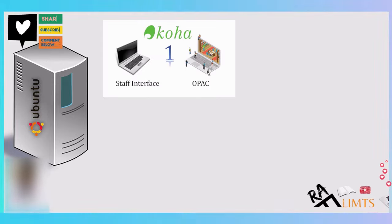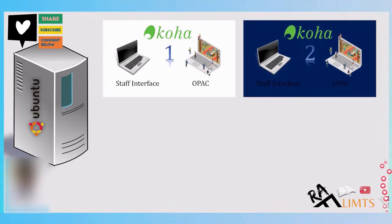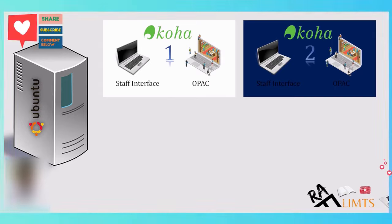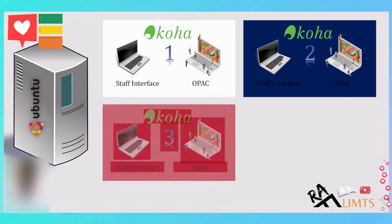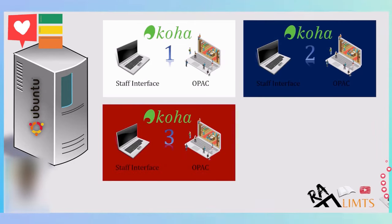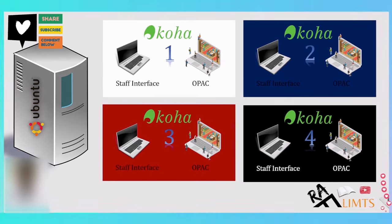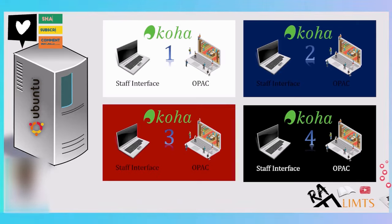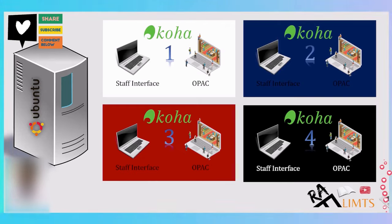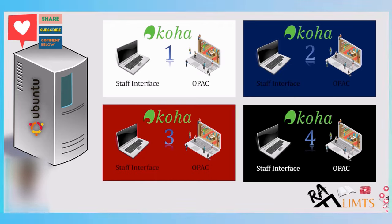But suppose you want to install Koha for a second institution within the same server machine with a separate staff interface and separate OPAC — then a third institution, fourth, fifth, sixth, and so on. I'm not talking about branches; I'm talking about separate staff interfaces for each institution. In that case, you have to work on multiple instances.